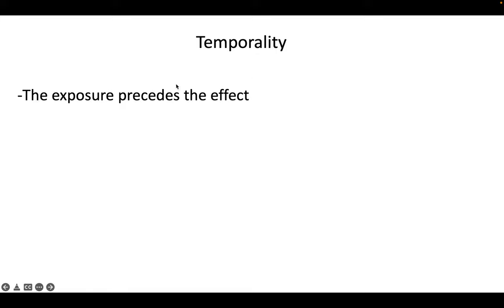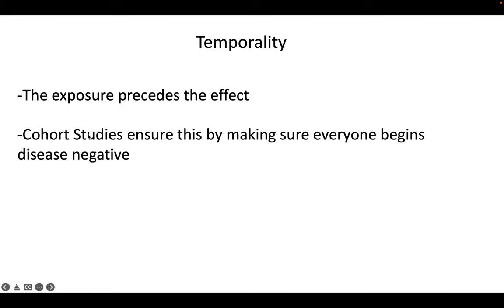Temporality is a great one — probably one of the most important. That's establishing that exposure is preceding the disease. There's the issue of reverse causality when two things are occurring at the same time. Like if we went to the beach and measured who's in the sun and who has a sunburn, we don't know that the sun came first — they might have arrived with a sunburn. That's basically what cohort studies bring to the table. With a cohort study, you establish a group of people who don't have a sunburn, follow them over time, see who gets a sunburn, and you can be certain the disease came second.